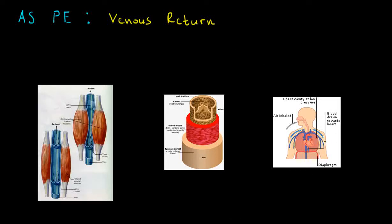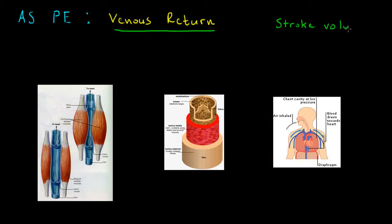We've seen in previous videos that the amount of blood that leaves the heart is dependent on the amount of blood that returns to the heart. The amount of blood that returns to the heart we refer to as venous return, and the amount leaving the heart we refer to as stroke volume. So stroke volume is in fact dependent on venous return. To maintain or increase it, we have five venous return mechanisms.